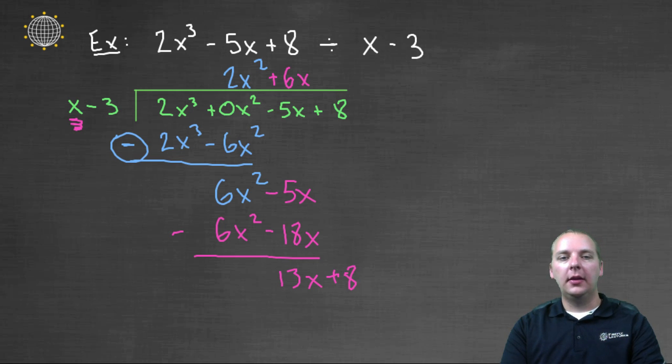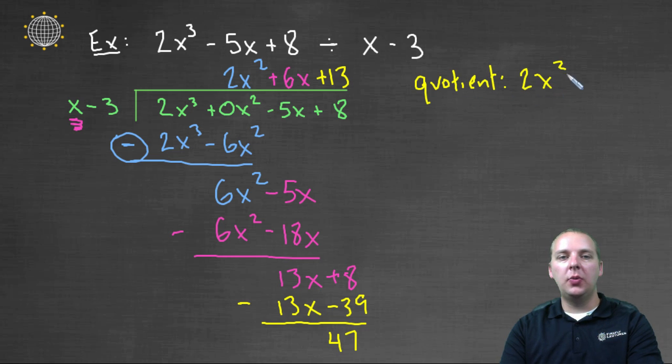I'll drop down the plus eight, and then let me change colors here one more time. And we'll play the game one last time. What times x gives you, gives us thirteen x? The answer is thirteen. And then we'll have, thirteen times x is thirteen x. And then thirteen times negative three makes minus thirty nine. We'll draw a line and we'll subtract. Thirteen x minus thirteen x cancels. And eight minus negative thirty nine makes eight plus thirty nine, which makes forty seven. So we have a quotient of two x squared plus six x plus thirteen. We obviously have a divisor of x minus three and a dividend of two x cubed minus five x plus eight. And we also have a remainder of forty seven.